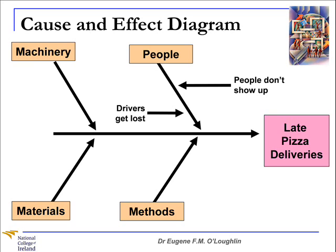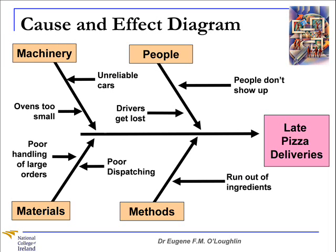We have our four main categories and I've spread the diagram out to make it more visible. Under the people category, I've identified two possible causes as to why people might be causing late deliveries: people don't show up, or drivers get lost. Under machinery, I've got unreliable cars and ovens being too small. Under materials, poor handling of large orders and poor dispatching. And under methods, run out of ingredients. There may well be others at this level, but we'll stick with these for now.